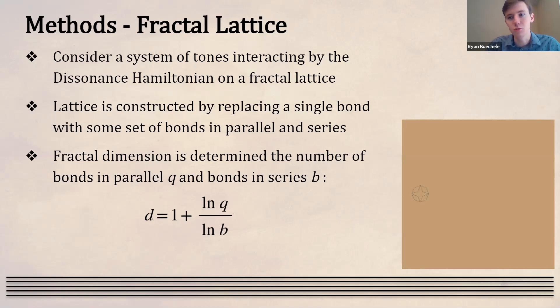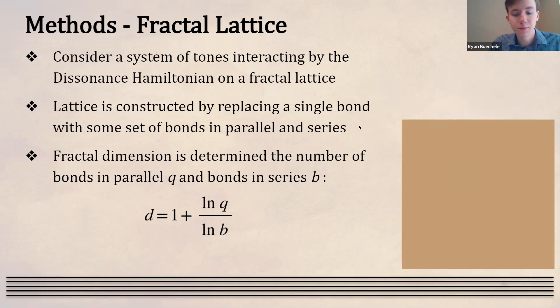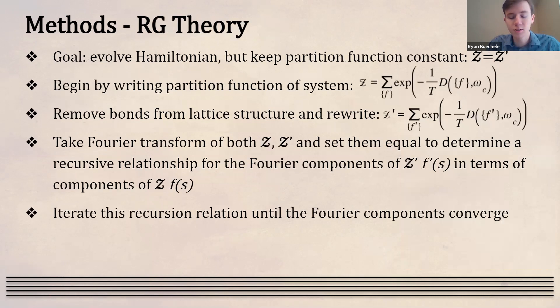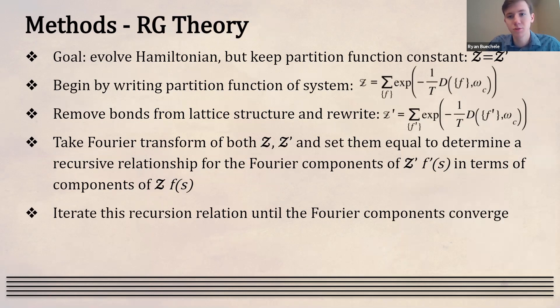We particularly expect the high-dimensional limit of the RG approach to converge to the mean field result, since at high dimension there are many more nearest neighbors, effectively giving mean field behavior. The goal is to move bonds on the lattice keeping the partition function Z constant while evolving the Hamiltonian parameters. We write Z, move or remove bonds, rewrite the partition function Z', take Fourier transforms of both, set Z equal to Z', and solve for the Fourier components of Z' — F'(s) — in terms of components of Z — F(s). This gives a recursion relationship for the Fourier components that we iterate until convergence.